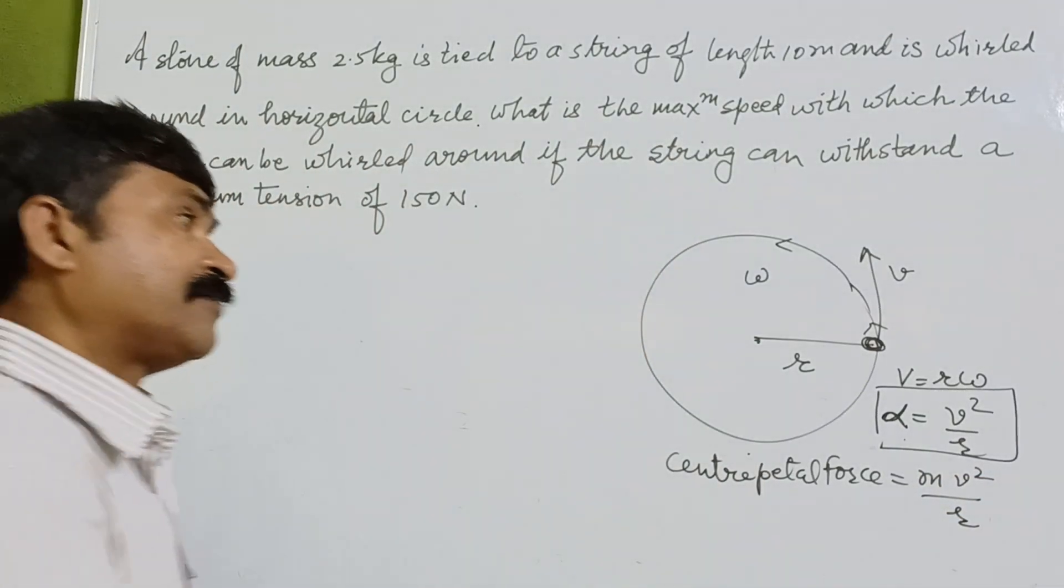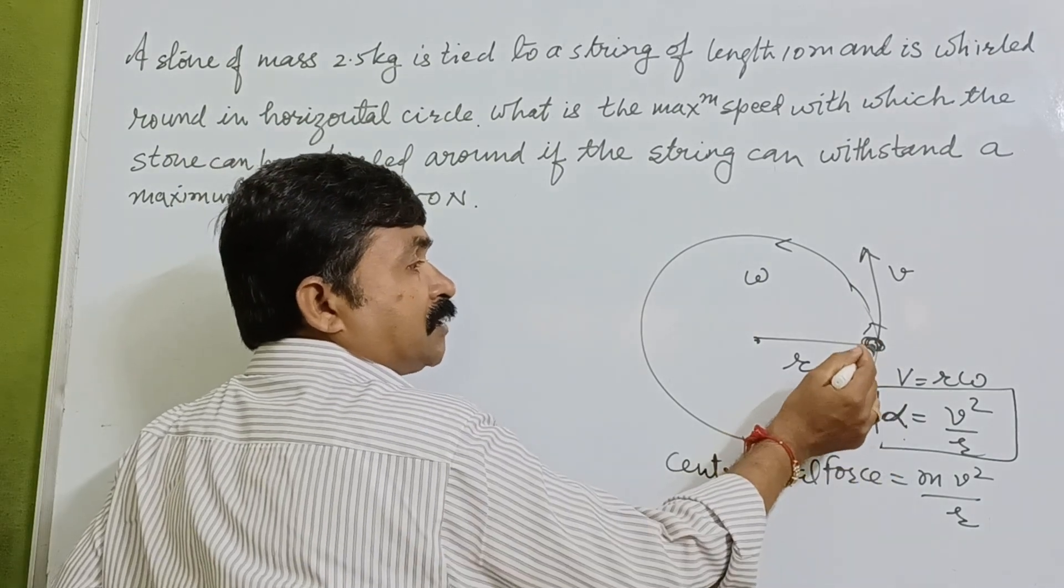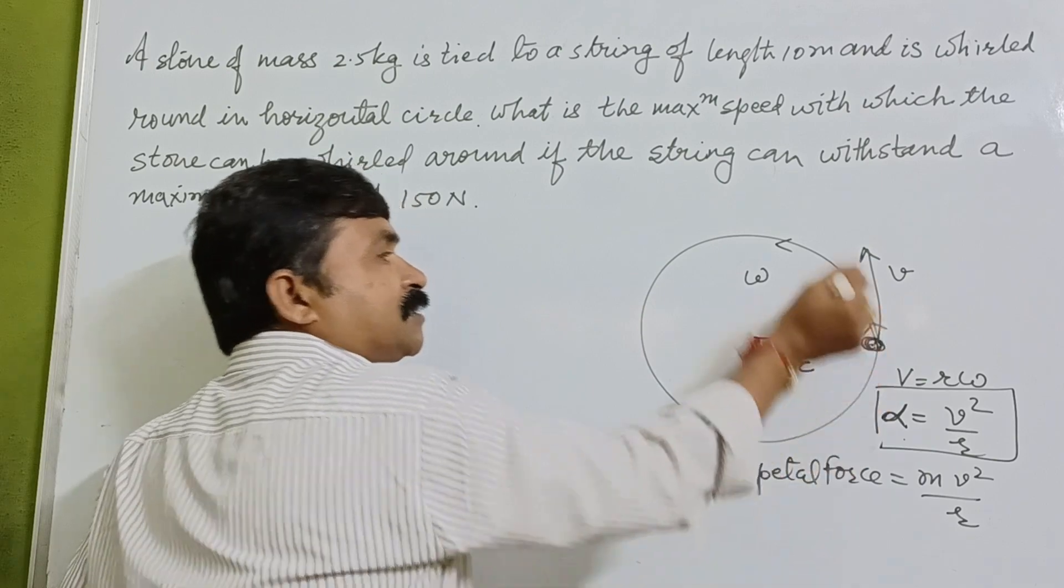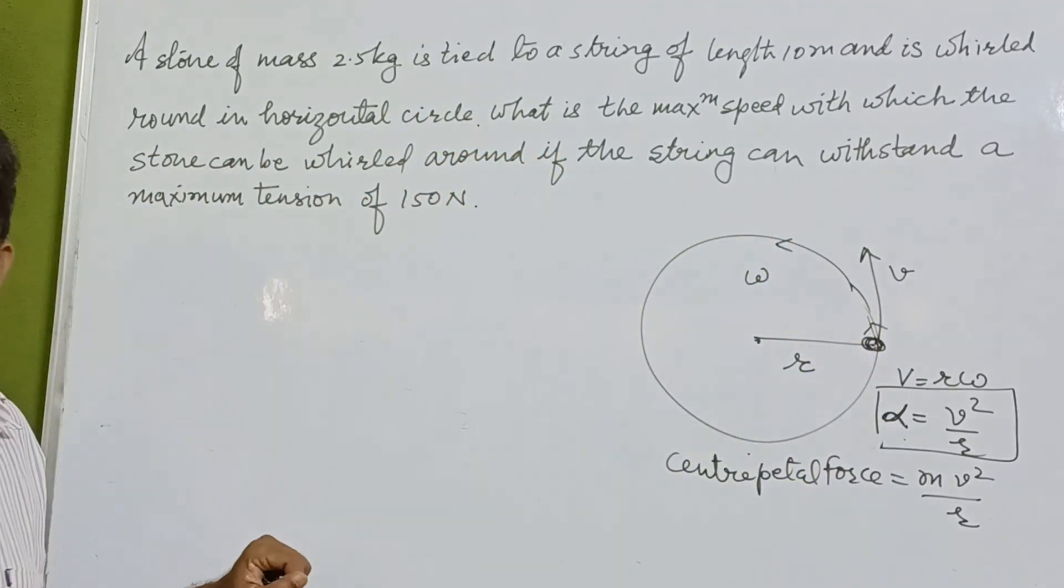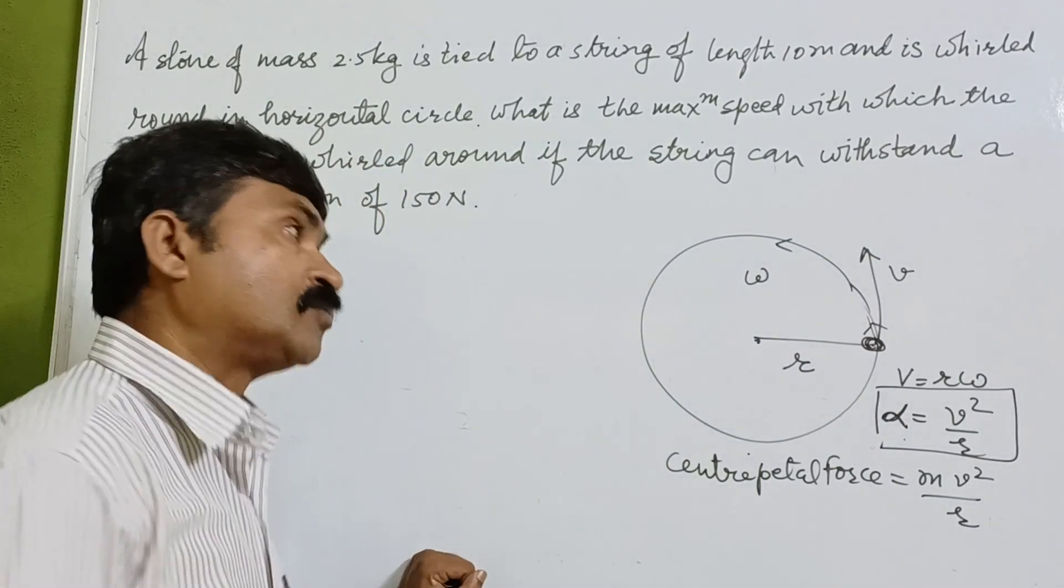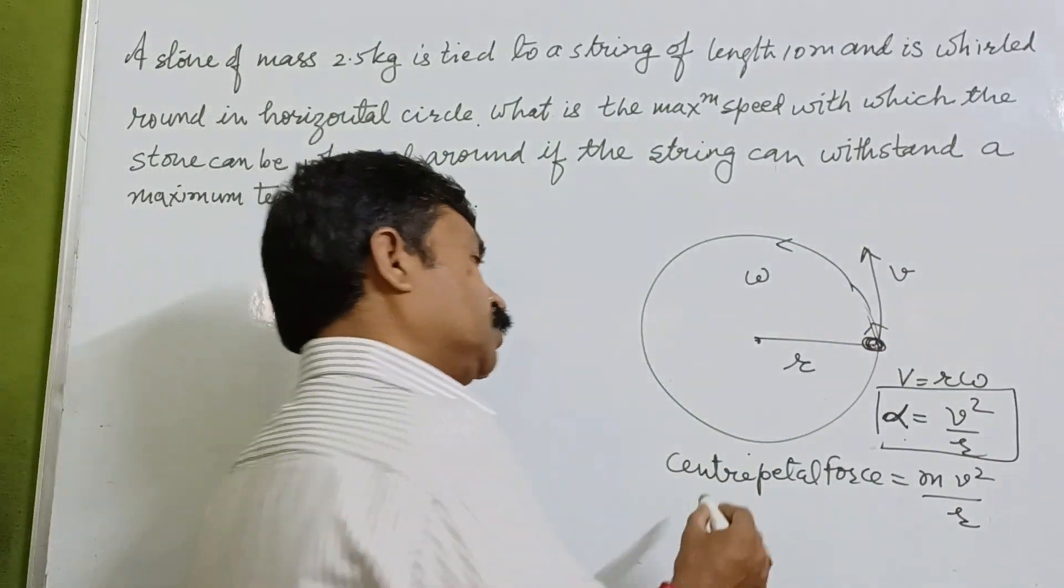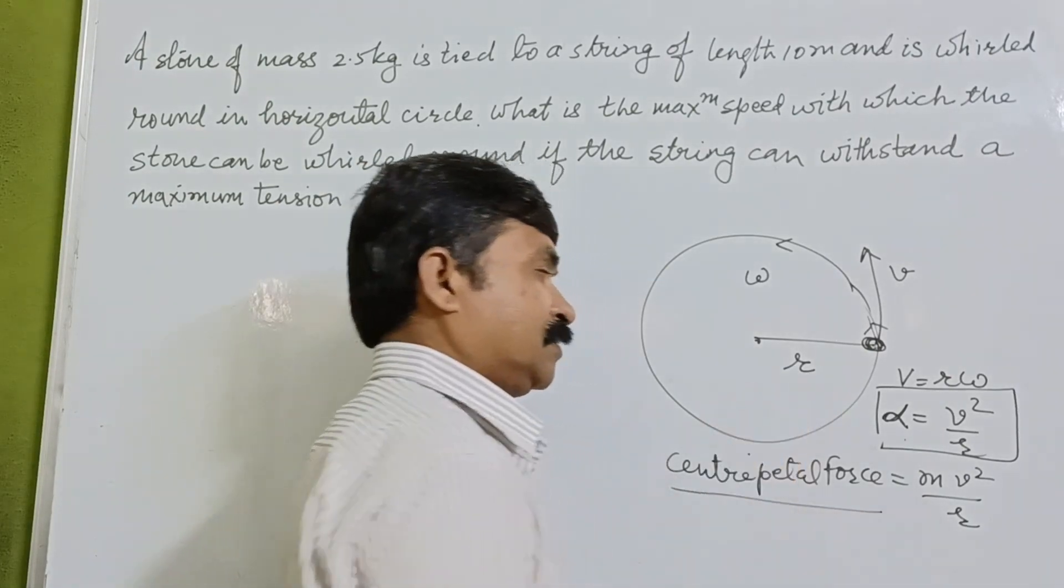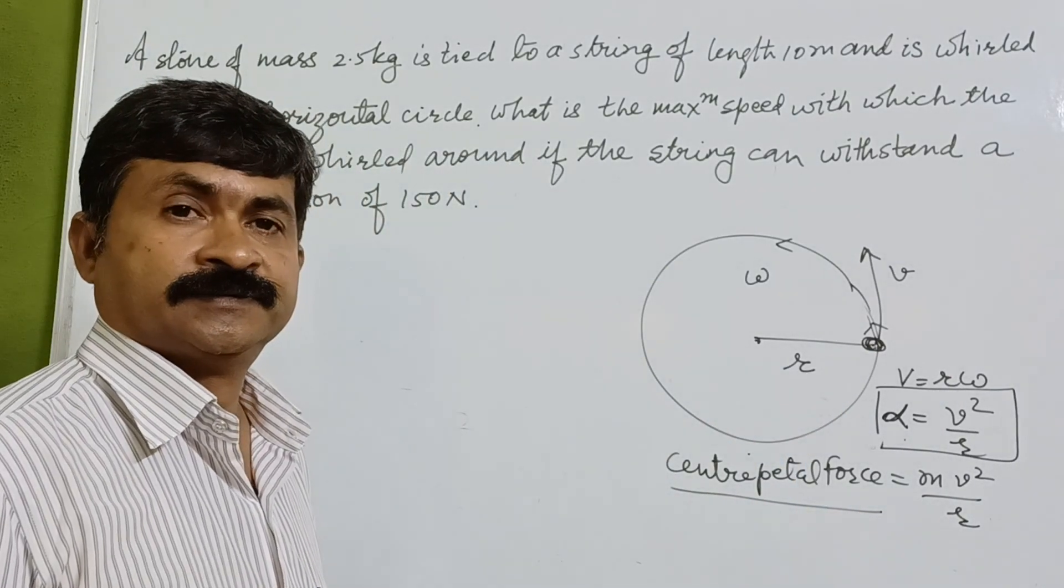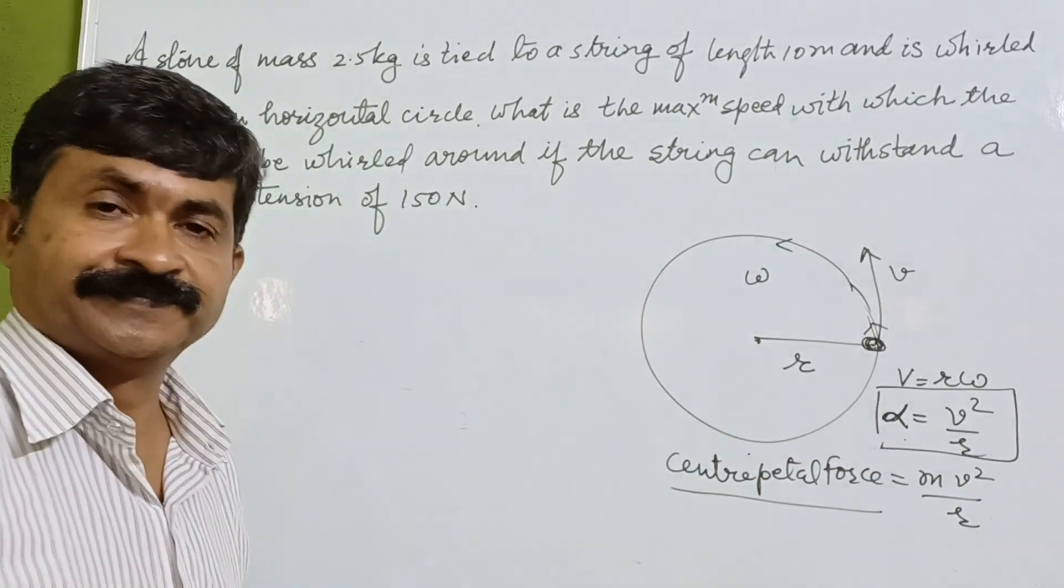Now, this mv square upon r is responsible for this particle to move in this particular circular path. And it is also maintaining the velocity, it is also maintaining the path of the particle. So this centripetal force is responsible for this motion.